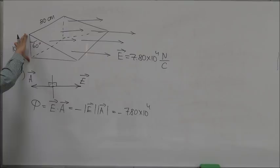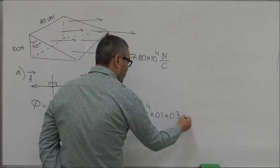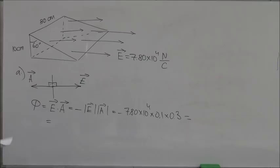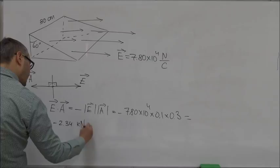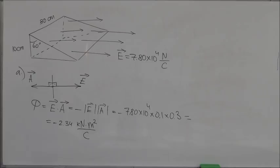Now we just need to calculate the magnitude of A, and that will be 0.1 times 0.3 in SI units, so 0.1 meter times 0.3 meter. When you do the calculation, the value is negative 2.34 kilonewton times meter squared per coulomb. So this is the flux through the rear side of the prism, let's call it F1.